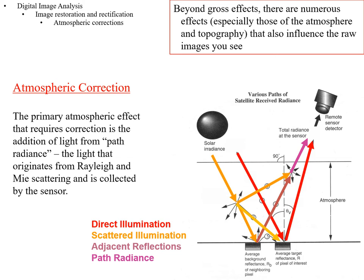The reason we want to remove path radiance is to be able to compare images. If you have one image with higher humidity, or maybe smoke and aerosol particles that are diffuse enough not to completely block the image but are giving biases in various bands, you'll need to remove the atmospheric effects to make that image directly comparable to a clear-sky image.